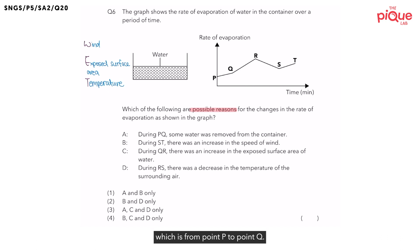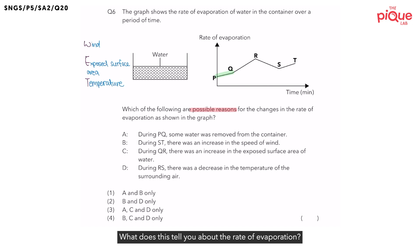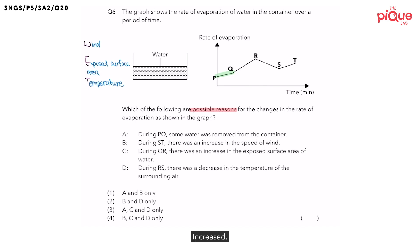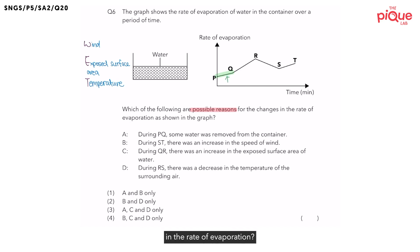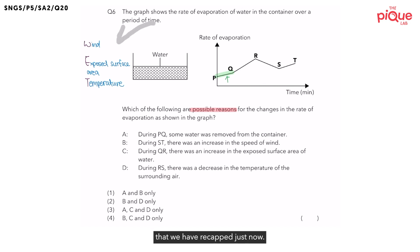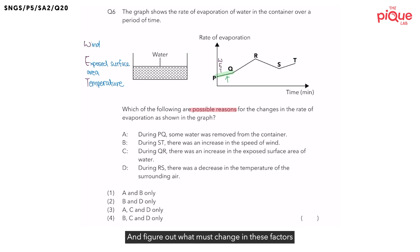First let's take a look at the start of the graph, from point P to point Q. Did the line increase or decrease? The line increased. What does this tell you about the rate of evaporation? The rate of evaporation increased. What could have caused this increase? It could be due to the factors of evaporation. I'm going to write down the acronym WET on top of the line and figure out what must change to result in an increase.